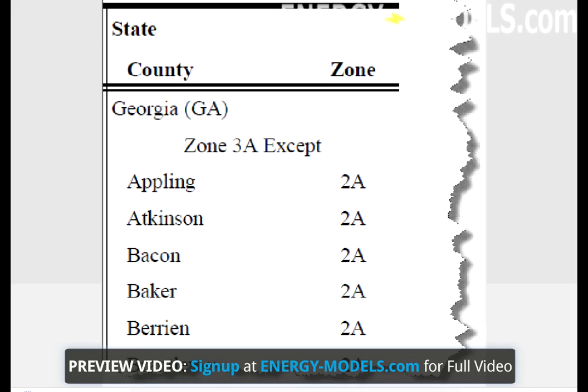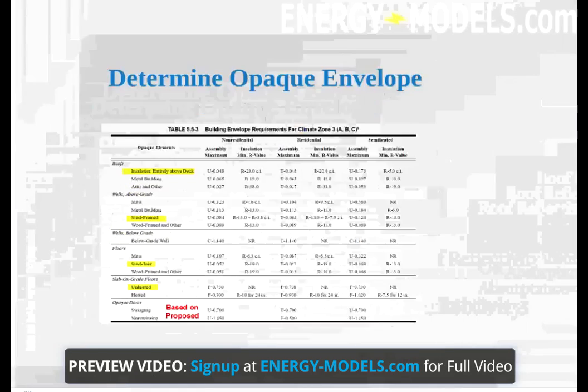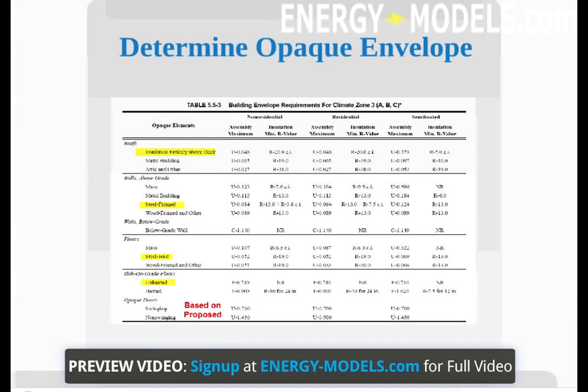One of the first steps to implement a baseline building is selection of the opaque envelope. Based on the climate zone, the corresponding table will be selected in Tables 5.5. There are several options listed.